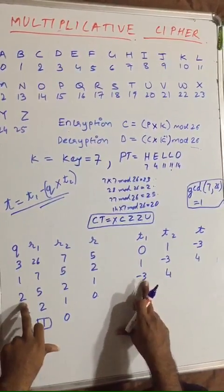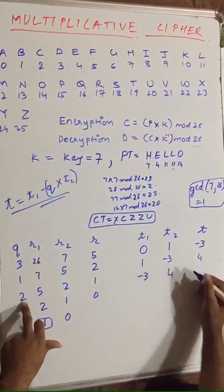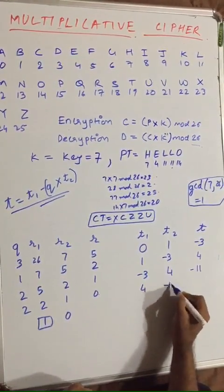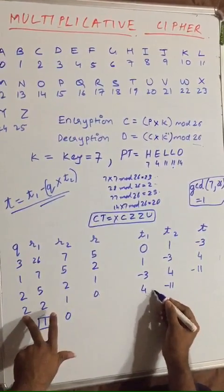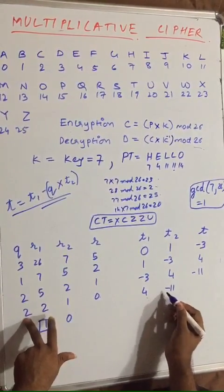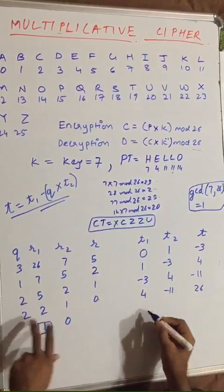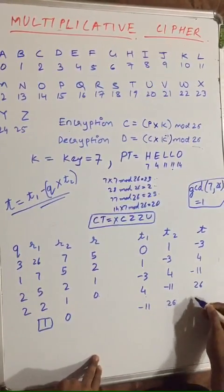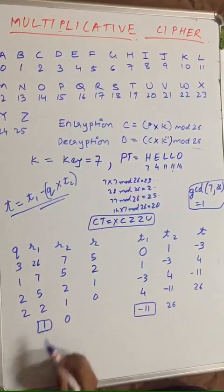Shift: T1=−3, T2=4. Next T = −3 − 2×4 = −3 − 8 = −11. Shift: T1=4, T2=−11. Final T = 4 − 2×(−11) = 4 + 22 = 26. So the sequence ends with −11 and 26, where the value corresponding to remainder 1 is −11.